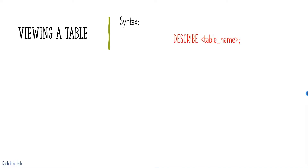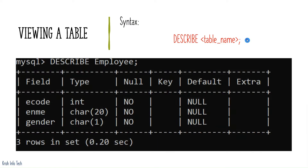Next, let's look at how to view a table. If you want to see the structure of a table, use the DESCRIBE keyword followed by the table name and a semicolon. This will display the column names, data types, whether the key is primary or foreign, default values, null or not null constraints, and extra information. Instead of DESCRIBE, you can also use the shorthand DESC followed by the table name.